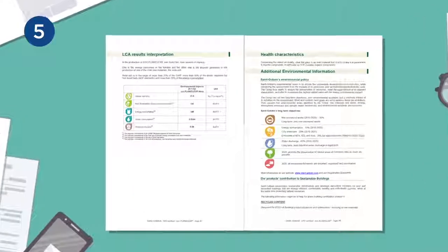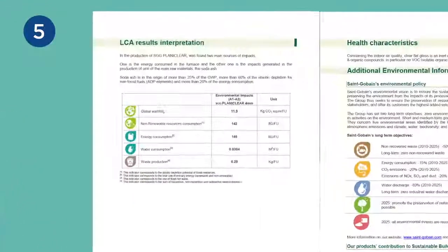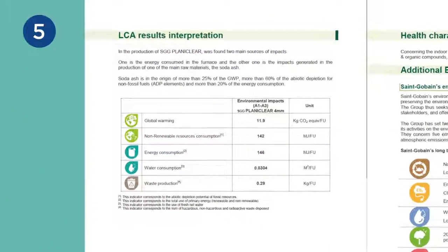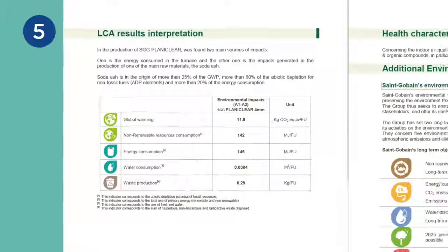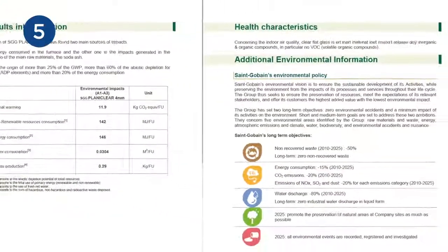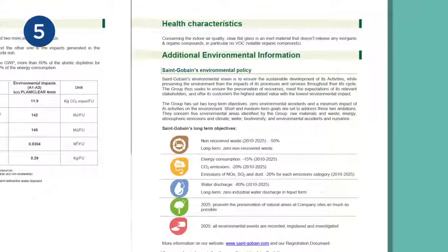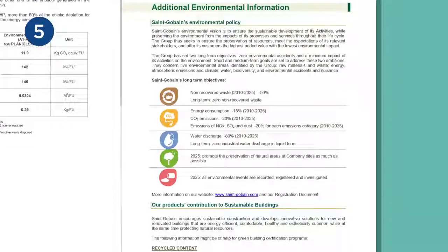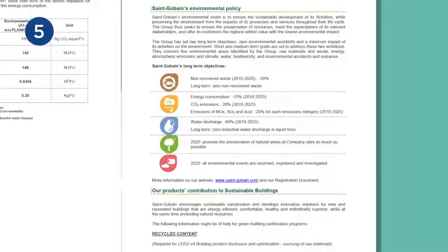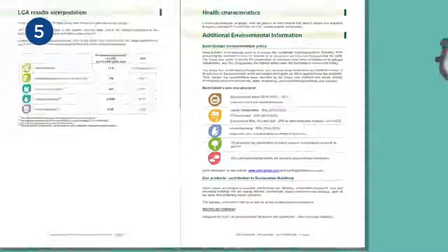Five: an analysis of the LCA results. At the end of the document there is a summary of major impacts — the energy consumed by the kiln and the impacts associated with the production of one of the raw materials, sodium carbonate. The final pages present further information about our environmental objectives, which might be worth mentioning to your customers.